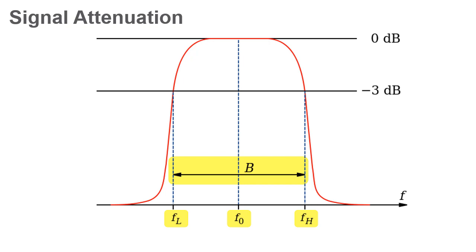Frequencies below the bottom edge of the pass band, FL, and above the top edge, FH, are attenuated. Frequencies inside the pass band are transmitted with no decrease in amplitude or voltage.